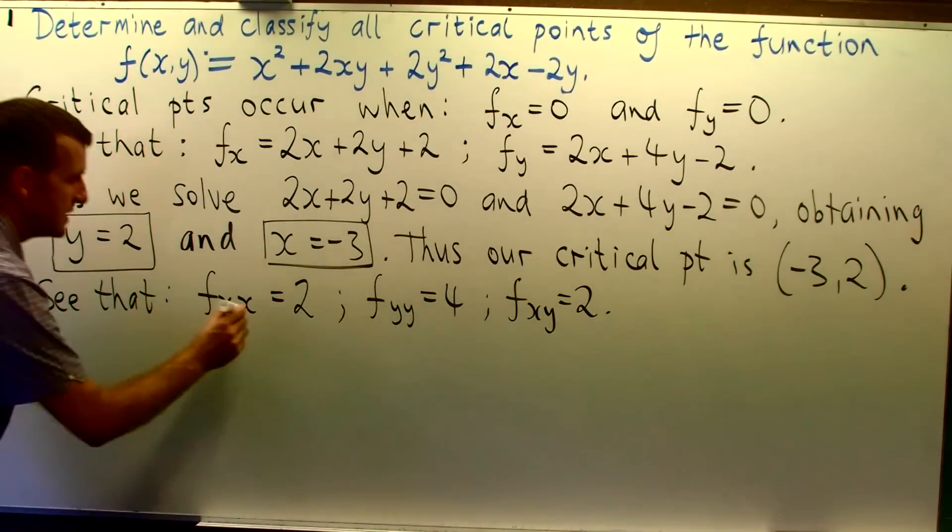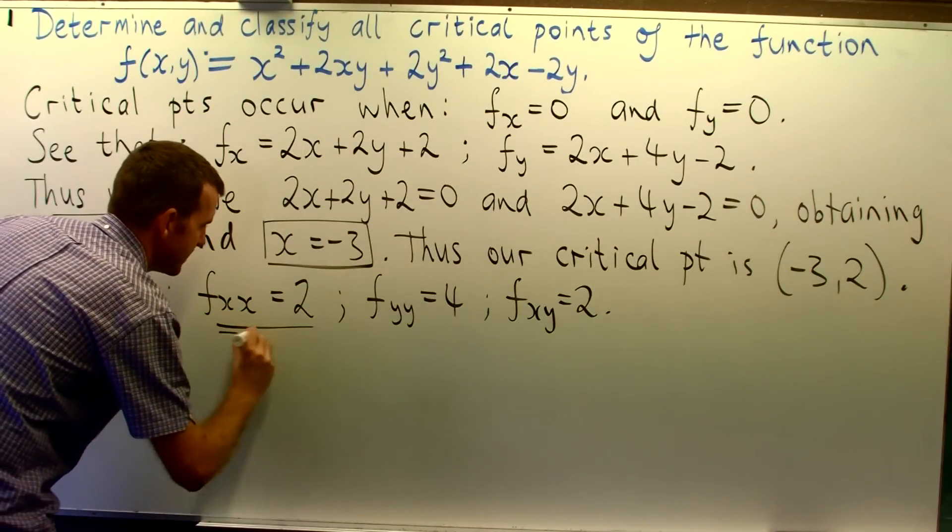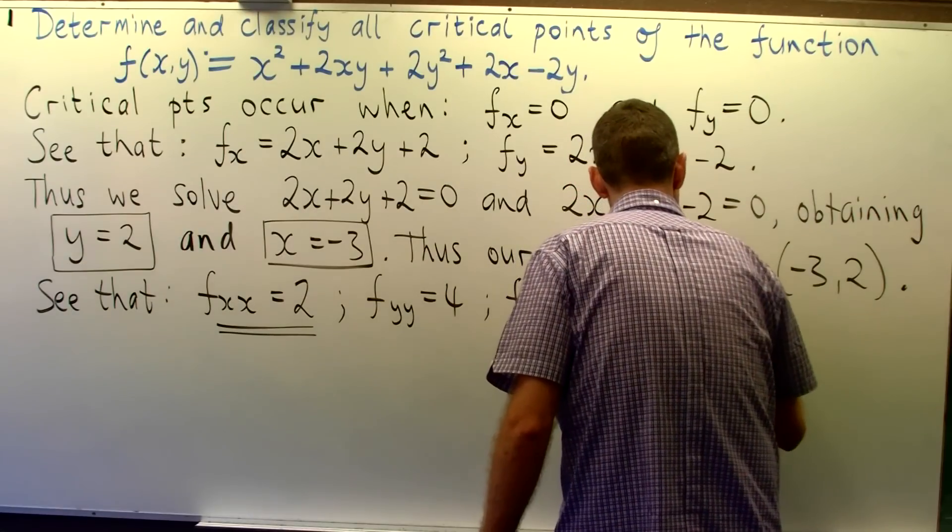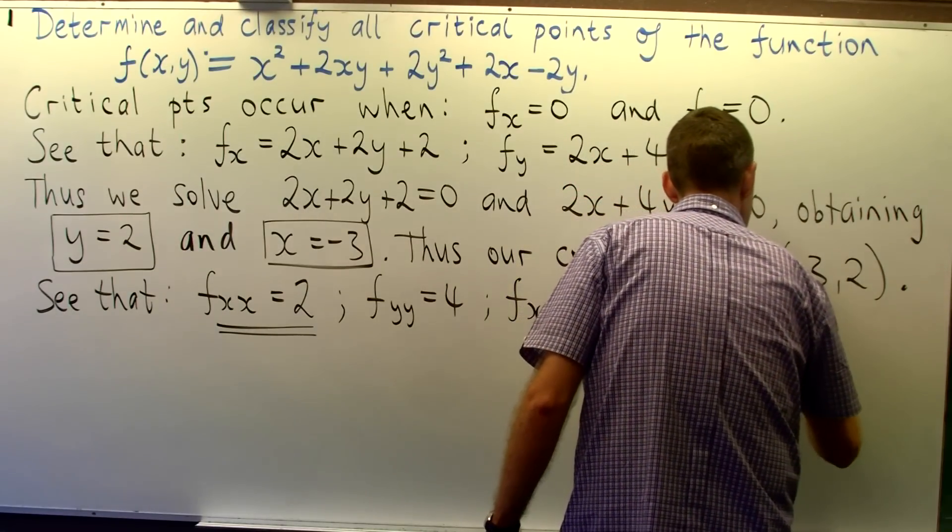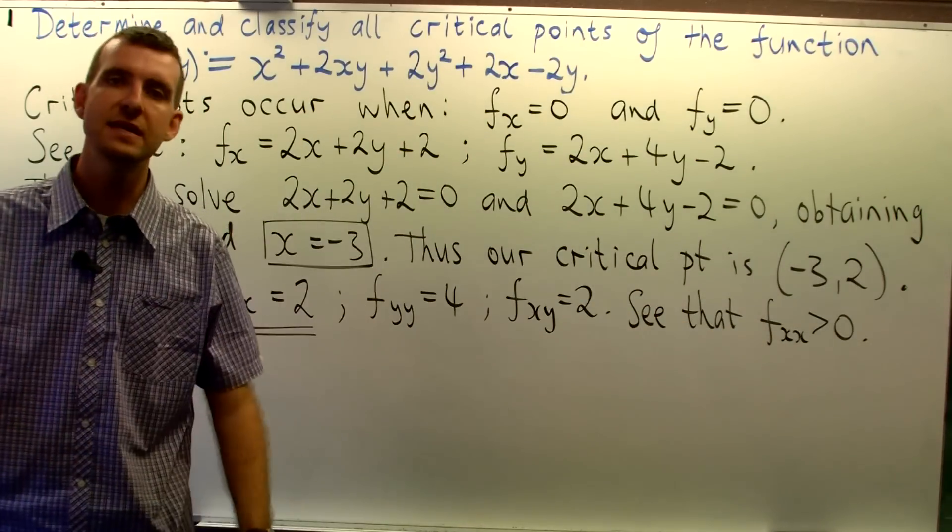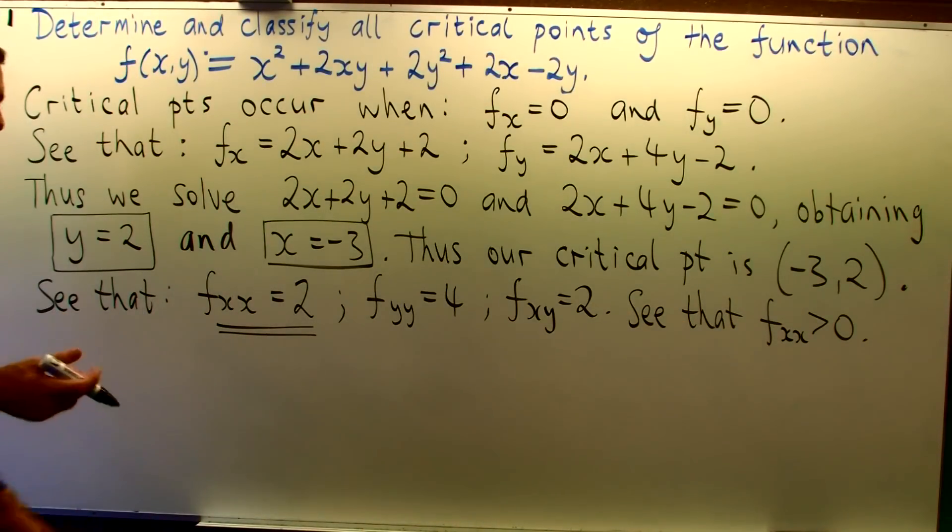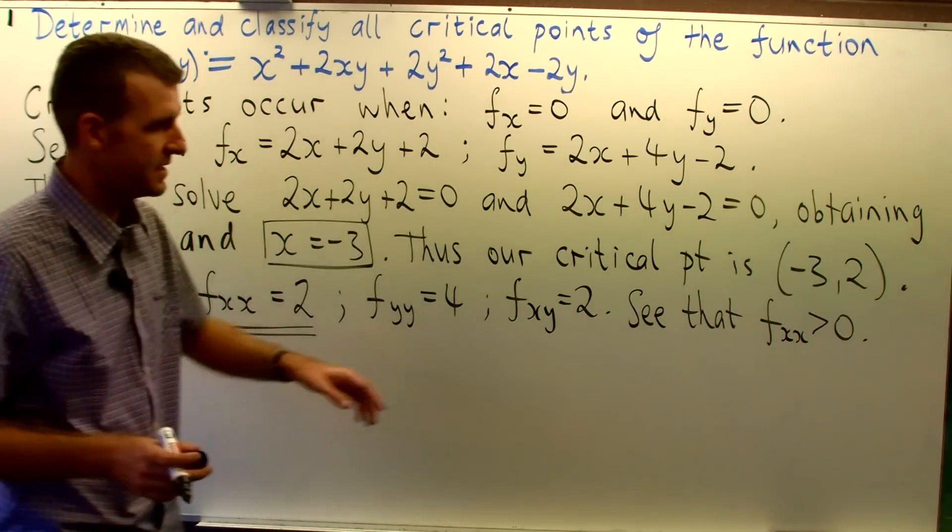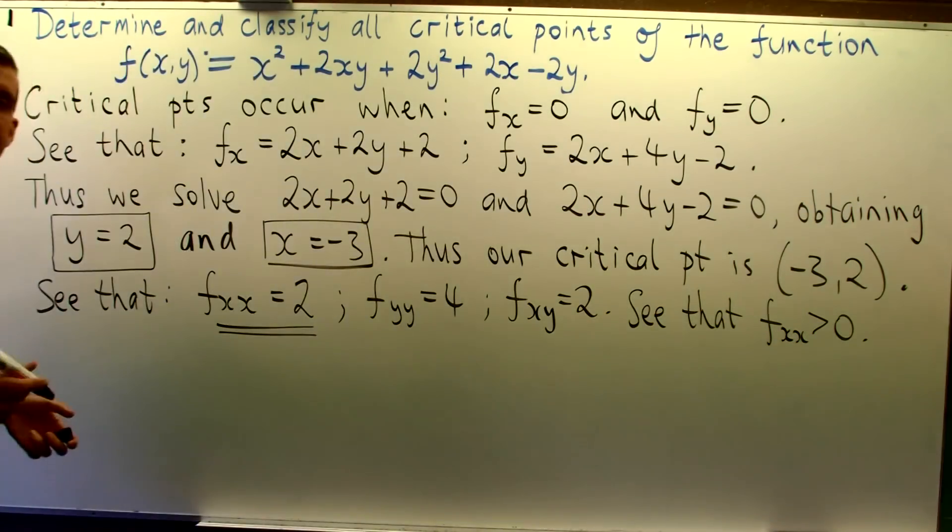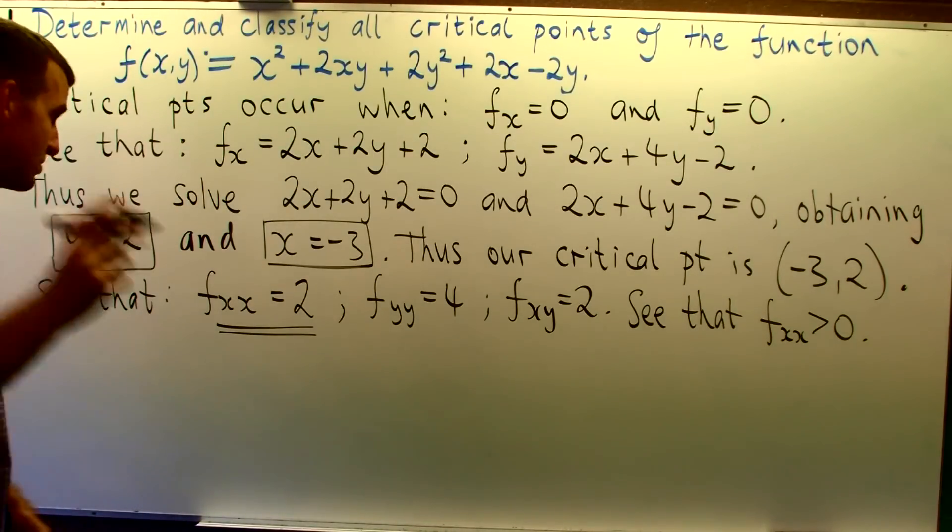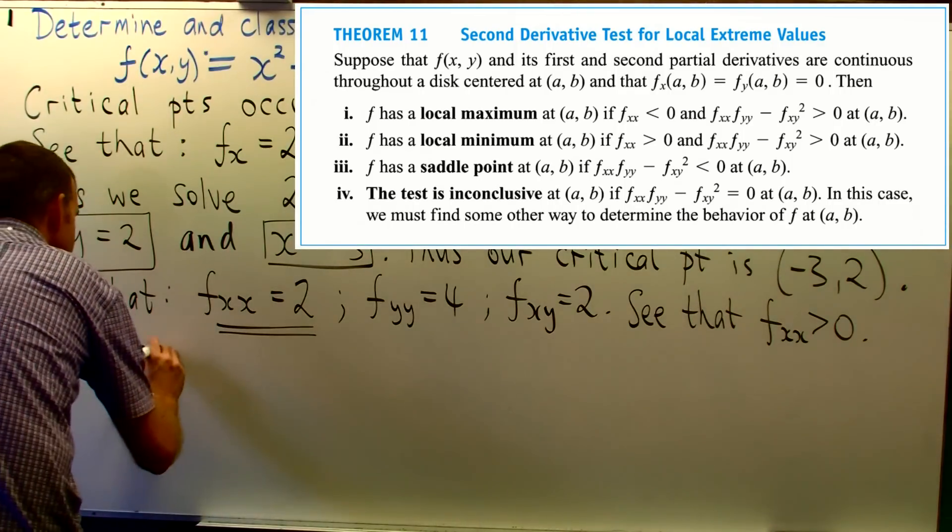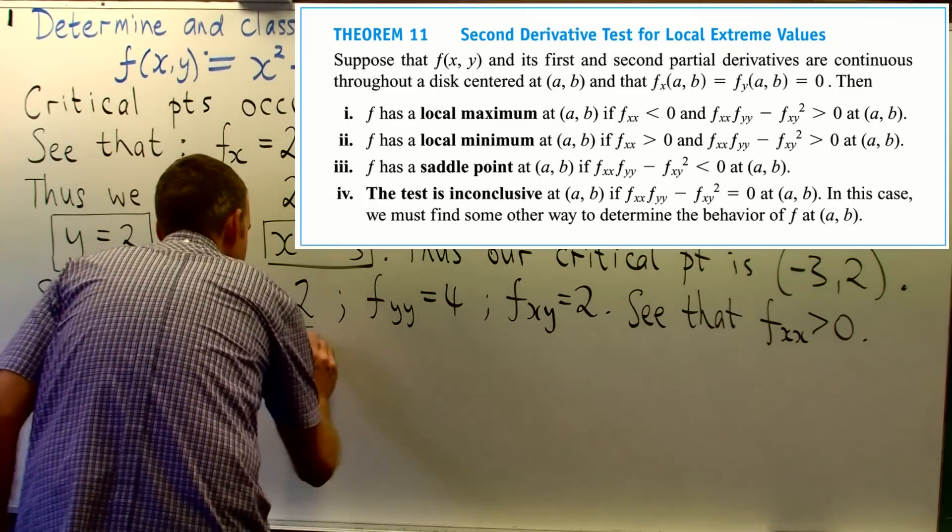Now the important piece of information here is the sign on f sub xx. Okay, this is important because it is used in our second derivative test. Now the second derivative test not only involves the sign of this derivative, but it also involves a discriminant, what is known as the discriminant.